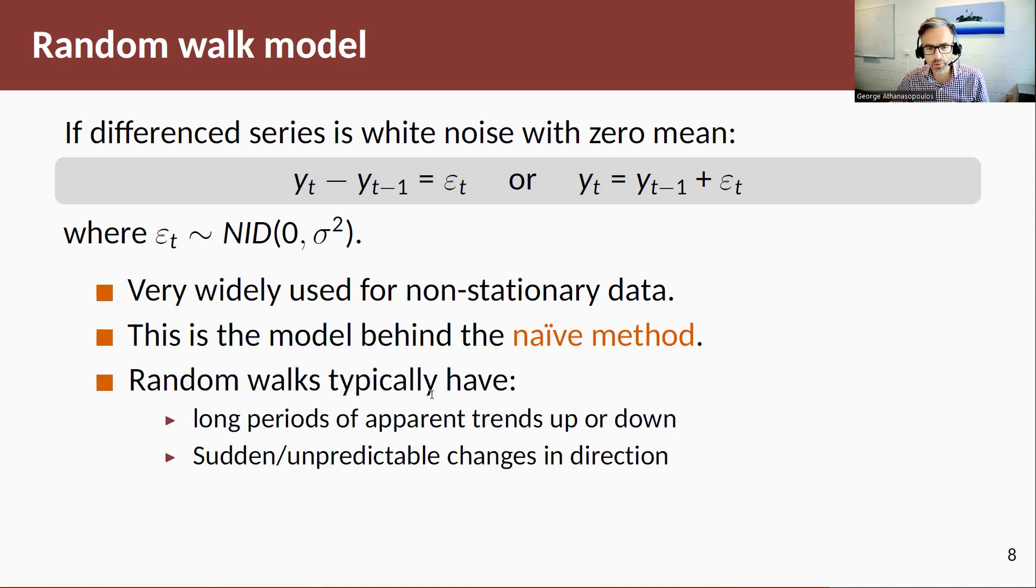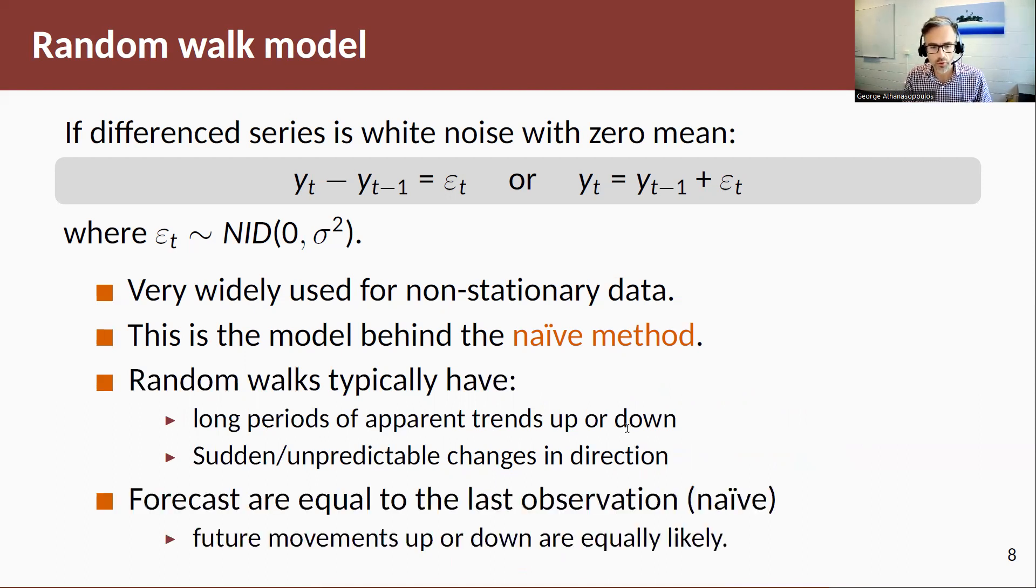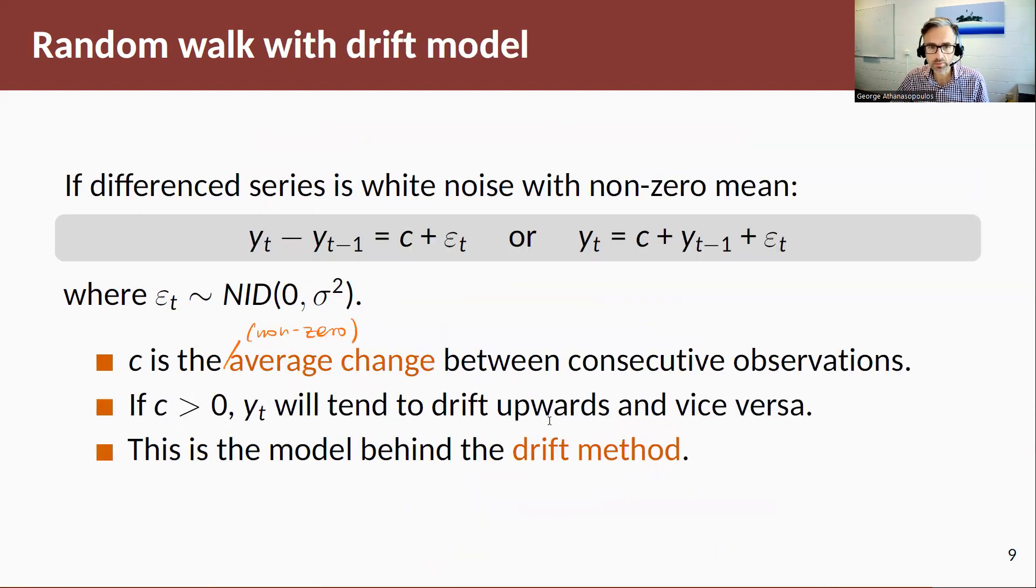Random walks typically have long periods of apparent trends up or down, then we have some sudden and unpredictable changes in direction. Hence these are very hard to predict. Generally these are referred to as a stochastic trend. Forecasts are equal to the last observation, hence the naive, and future movements up or down are equally likely.